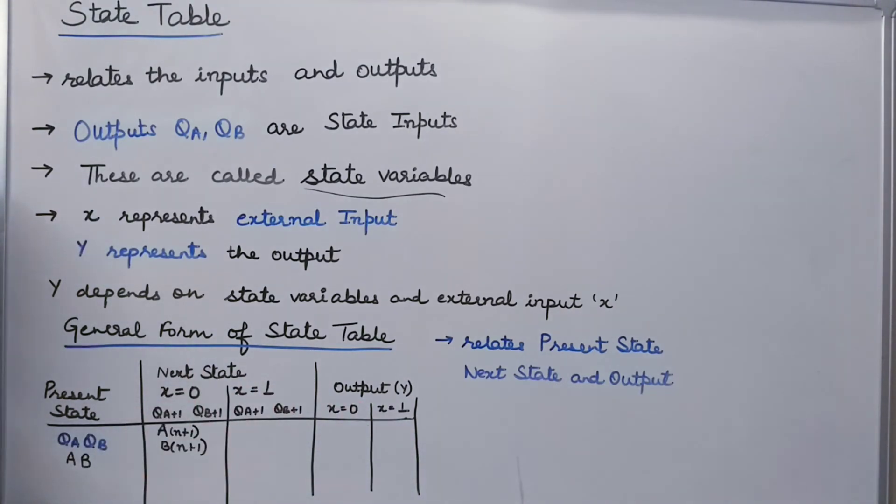This output is also written for X equal to 0 and X equal to 1, means I will be considering my input for X equal to 0 once then for X equal to 1 once.